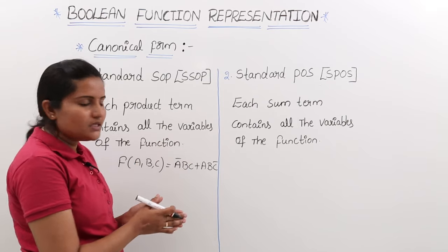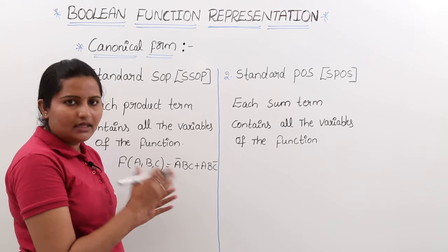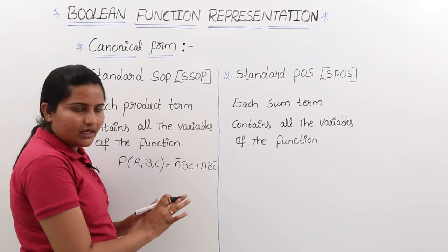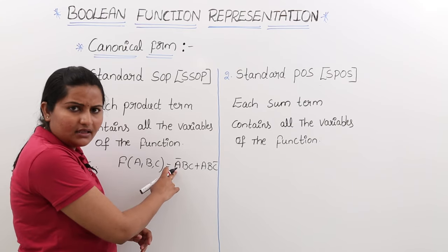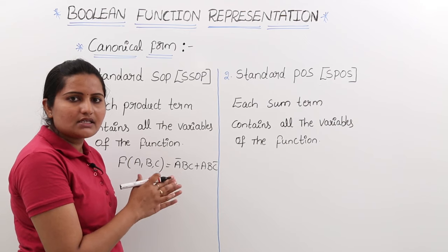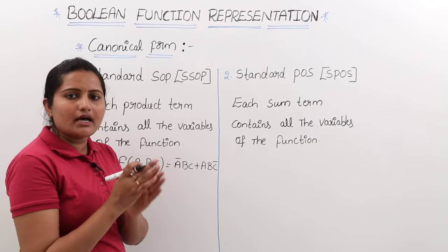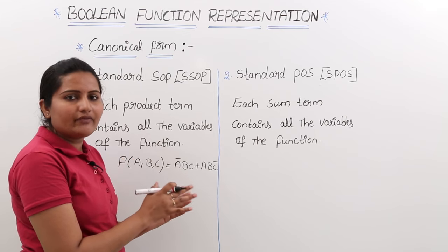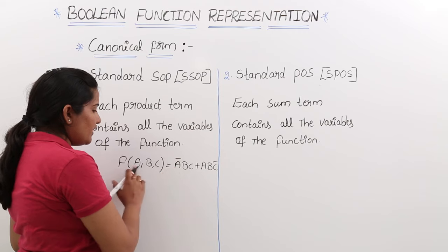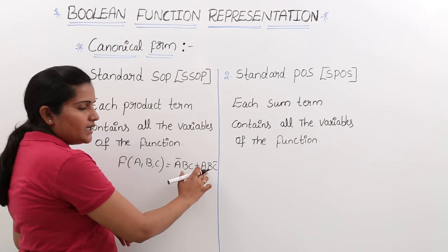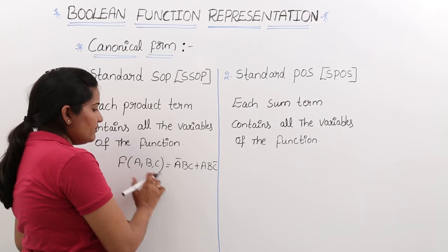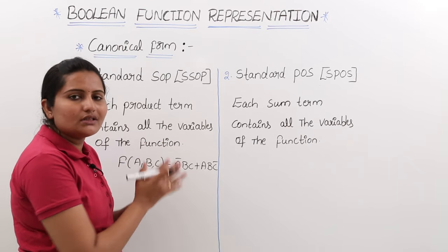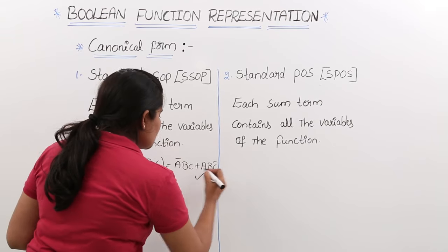How can we say this is standard SOP? Whenever each product term contains all the variables, we can call it standard SOP form. Here a, b, c are our variables. See this product term — a-bar is there, which is related to variable a. You may have a or a-bar as a literal, but you need a trace of all the variables in each and every product term. Here you have a-bar (related to a), b, and c. In the second product term: a is there, b is there, and complement of c is there — all traces of the variables are present, so this is in standard SOP form.